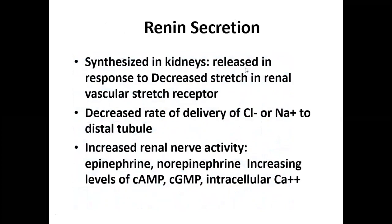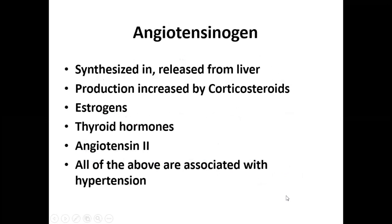Renin is synthesized in the kidneys and released in response to decreased blood pressure detected by stretch in the renal vascular receptors. It decreases the rate of delivery of chloride and sodium to the distal tubule. Increased renal nerve activity via epinephrine and norepinephrine also stimulates renin release. Angiotensinogen is synthesized in the liver; its production is increased by corticosteroids, estrogen, thyroid hormones, and angiotensin 2, all associated with hypertension.